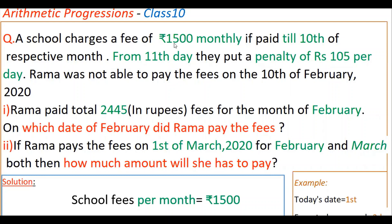A school charges fees of 1500 rupees monthly if paid till the 10th of the respective month. From the 11th day, they put a penalty of 105 rupees per day. So the school charges 1500 rupees as monthly fees, and if it is not paid by the 10th of any month, a penalty of 105 rupees per day applies from the 11th day onwards.